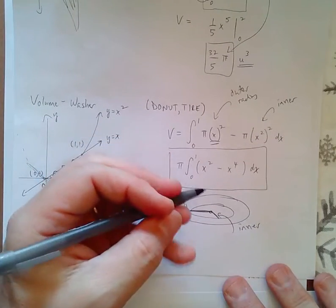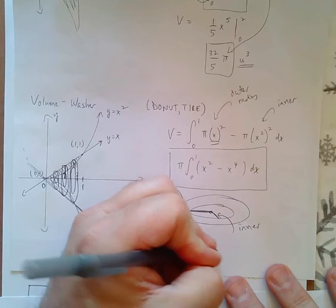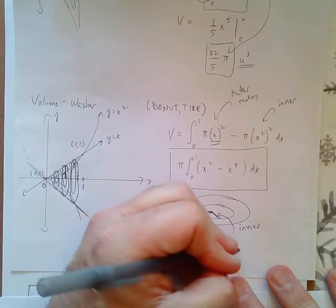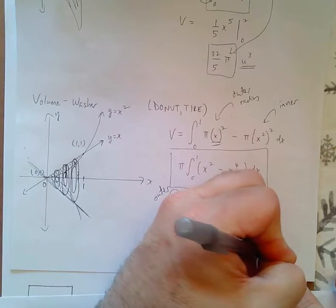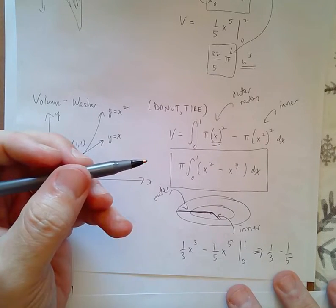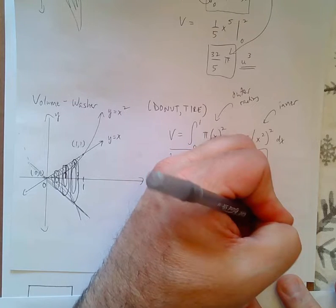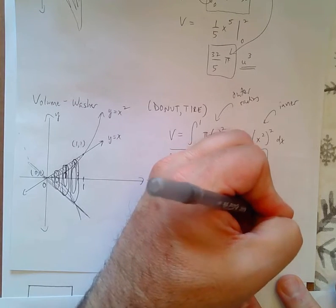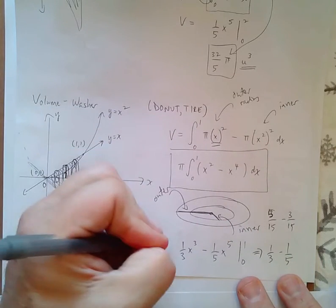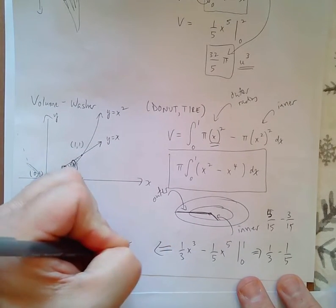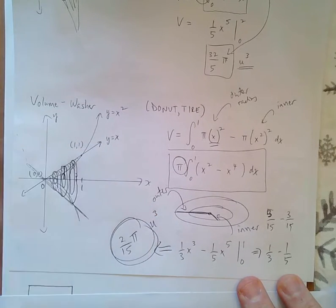Real quick, I'll do it for you. It's one-third x cubed minus one-fifth x to the fifth from zero to one, which would be one-third minus one-fifth, which is five-fifteenths minus three-fifteenths, which will give you an answer of two-fifteenths, and then don't forget the pi. That's going to be the volume cubic units.